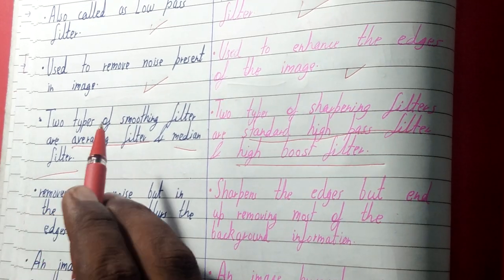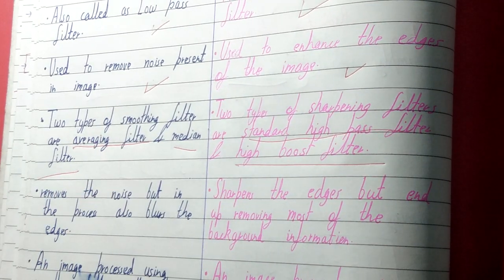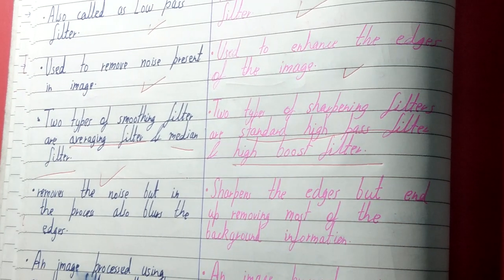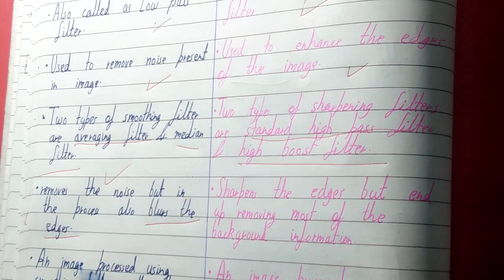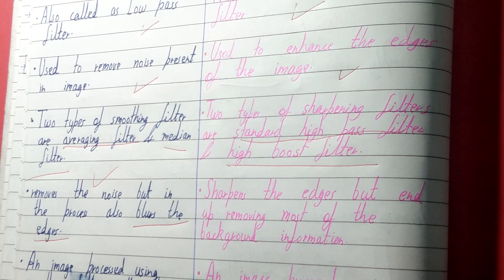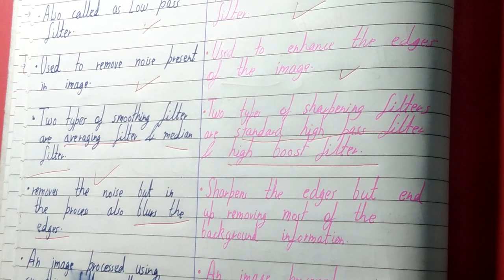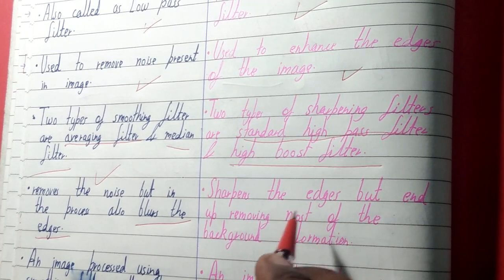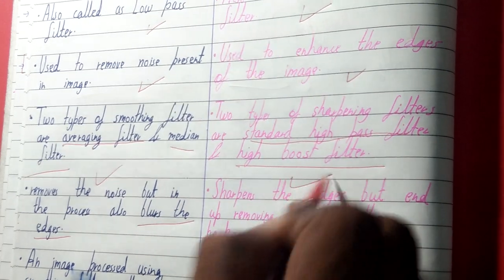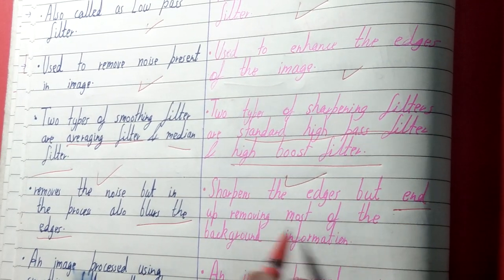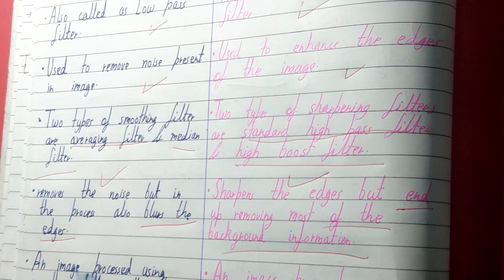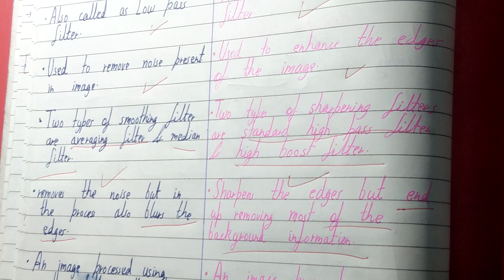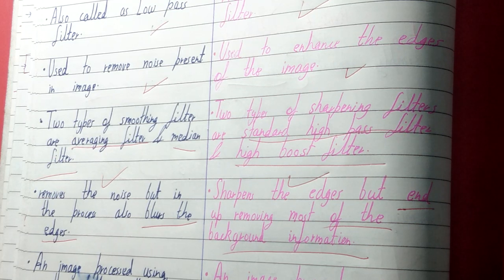The problem with the smoothing filter is that while it removes noise, it also blurs the image — specifically it blurs the edges — which reduces the quality of the image. The problem with the sharpening filter is that while it sharpens the edges, it ends up removing most of the background information, because it uses a high pass filter and does not allow low frequency content to pass through, so the background disappears.